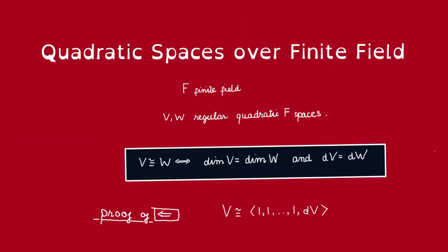Remember, previously we said that quadratic spaces of a finite field are completely determined by their dimension and discriminant because we can always write each such space as follows.